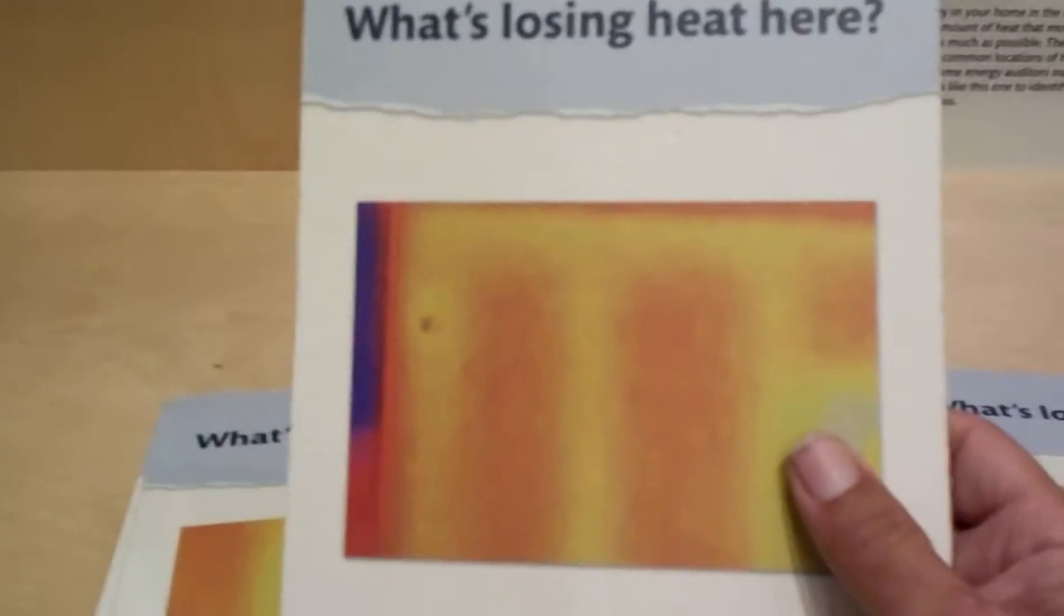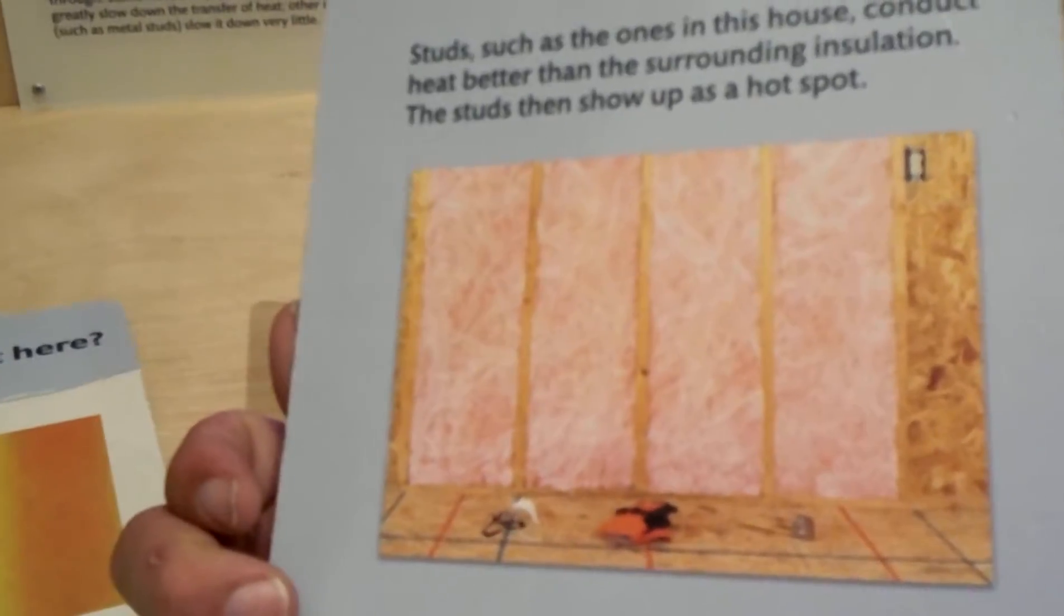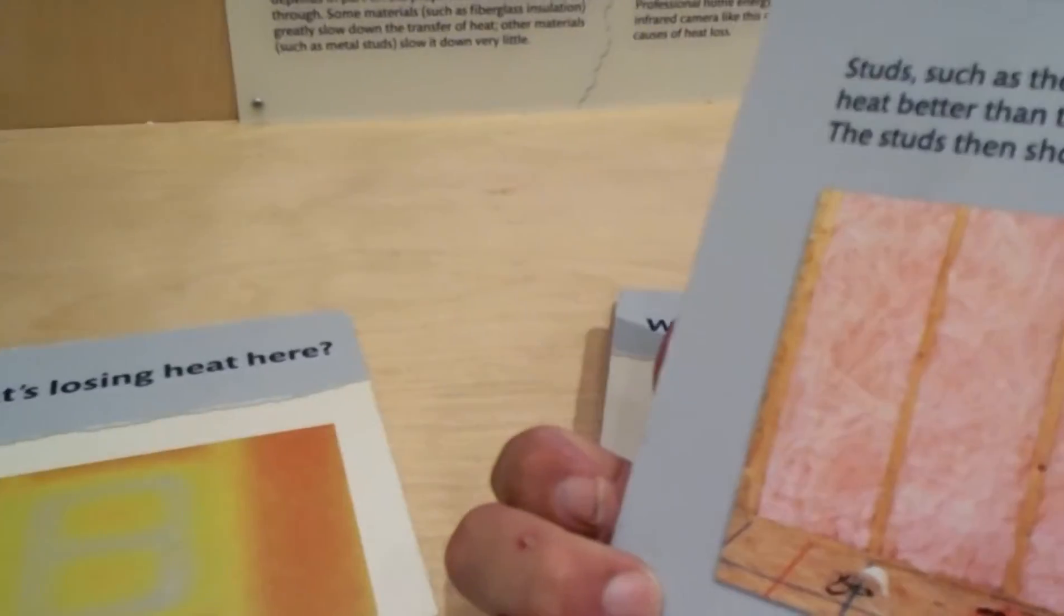This is the studs in the wall because they don't stop the transfer of heat as well as the insulation does. So you can see where the studs are. That's not stopping the transfer of heat.